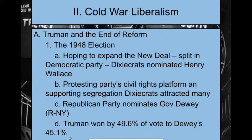The 1948 election happens. Truman hopes to expand on the New Deal. The Democratic Party splits because of what's called the Dixiecrats — Democrats holding on to the Confederate Democrat ways of more segregation and white supremacy. They protest the party's civil rights platform. Truman has desegregated the military and other federal institutions, so Democrats who don't like that join the Dixiecrats and fight it.